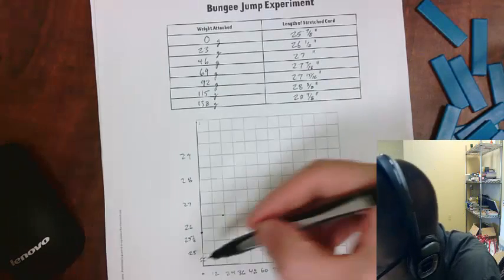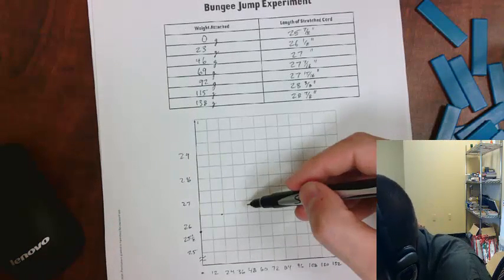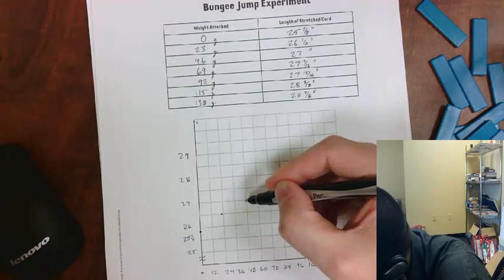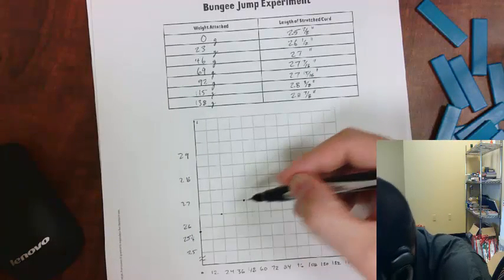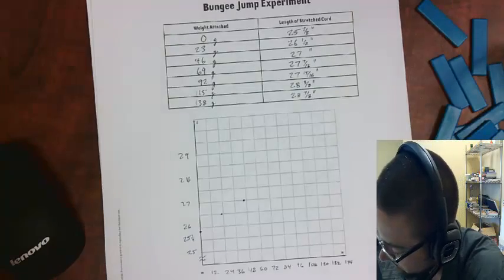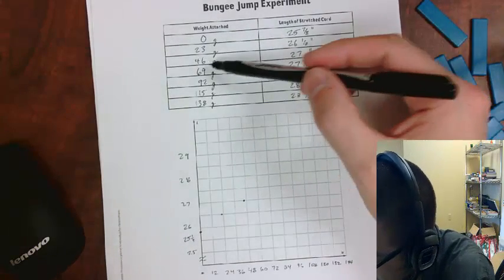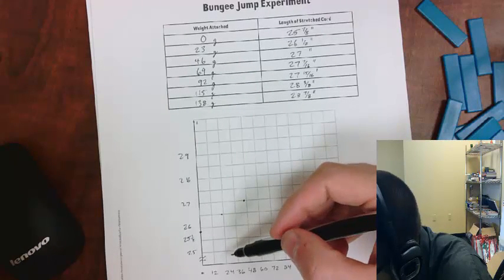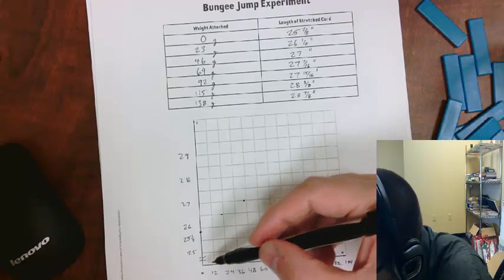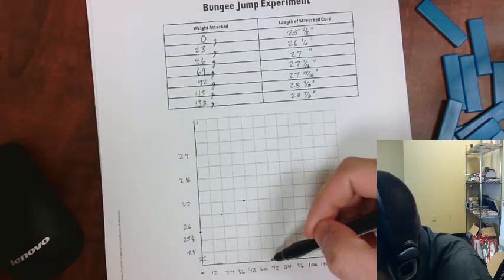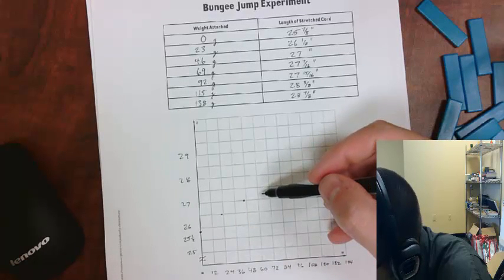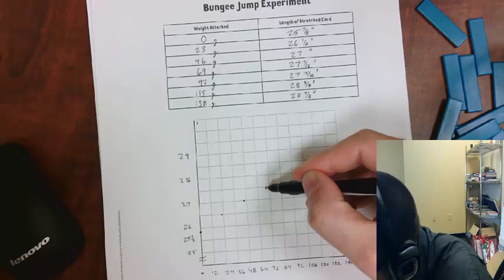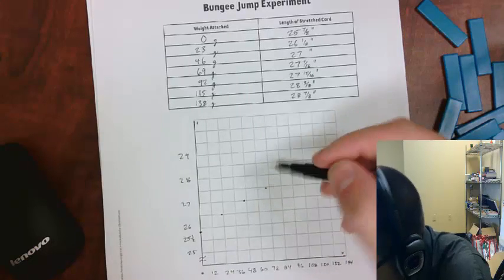46 and 27, so 46 is a little less than 48, and 27 even is that line right there. So it's going to be on that line, just a little bit less than 48. All right. 69, 27 and 7 sixteenths, so 69 somewhere in here, and then 27 and 7 sixteenths, which is a little bit less than a half. So we'll put it right there.